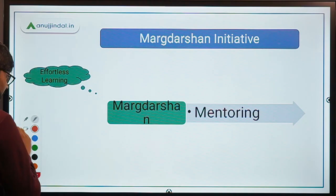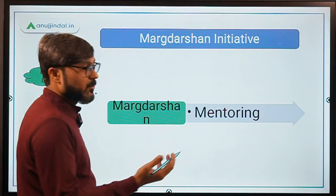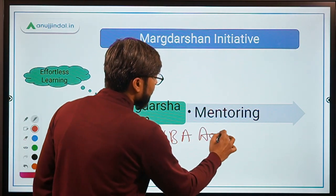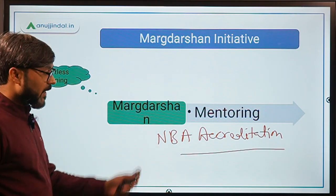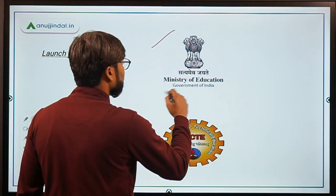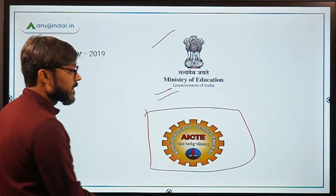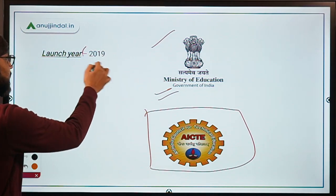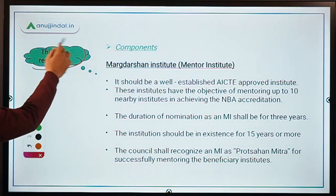This mentorship will also be provided to institutes so that they will be able to get NBA accreditation. The ministry responsible is the Ministry of Education, currently headed by Dr. Ramesh Pokhriyal Nishank, and the implementing agency is AICTE — the All India Council for Technical Education. It was launched in 2019.